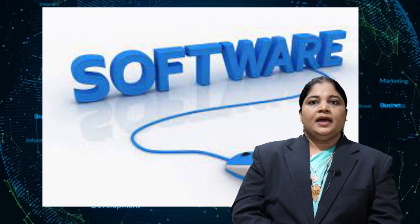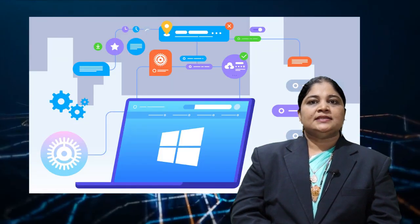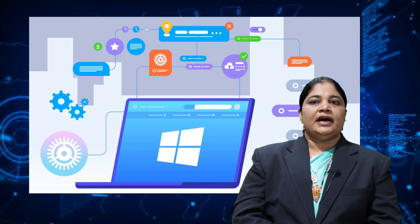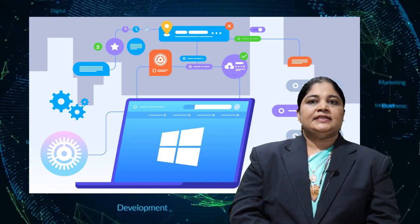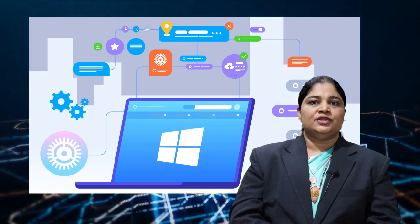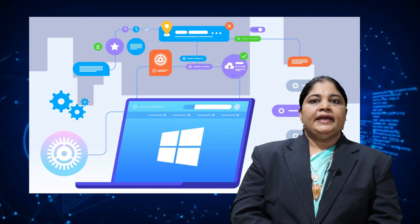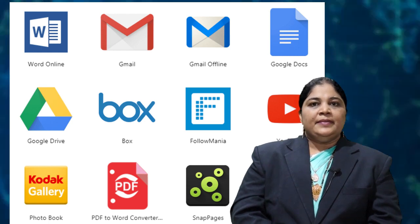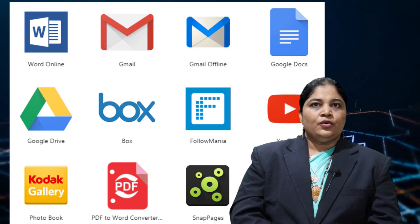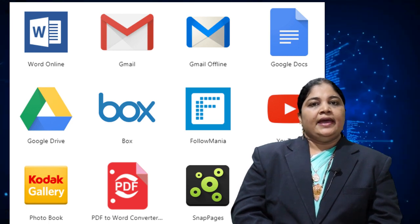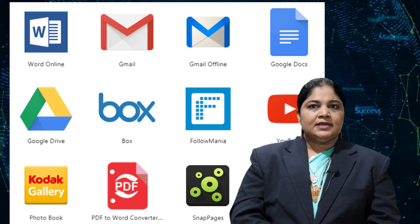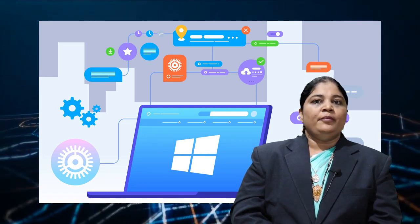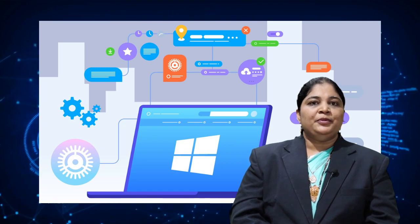Computer software is the set of instructions that can be stored and run by hardware. The software is responsible for directing the work to the hardware. It is designed and developed by experienced programmers in high-level language. Software is soft because it is easy to change. Examples of software are MS Word, MS Excel, PowerPoint, Google Chrome, Windows, MS Paint, etc. Hardware cannot perform any task without software, and software cannot be executed without hardware. A combination of hardware and software forms a usable computing system.